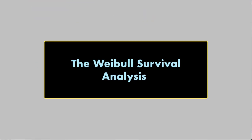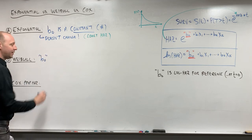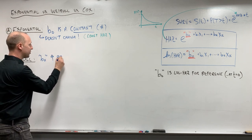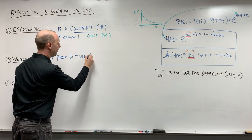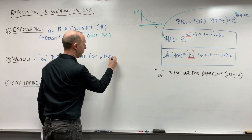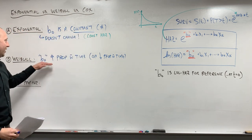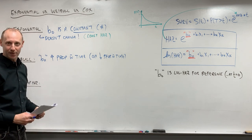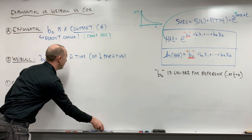Now, the Weibull, where this differs a little bit, this b0, the intercept term, it increases proportionally with time or it can decrease proportionally with time. Okay, one or the other. So as time goes by, we can think of the b0, the intercept is slowly increasing, or we can think of it as slowly decreasing.